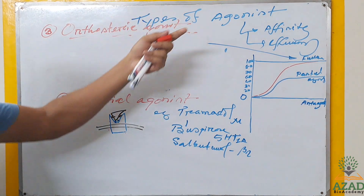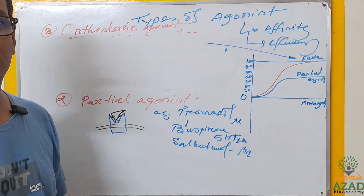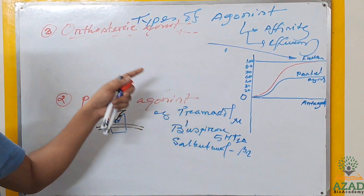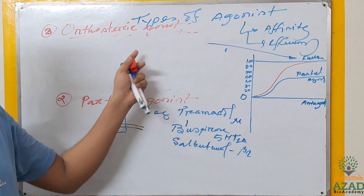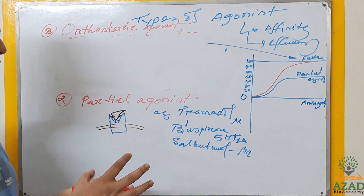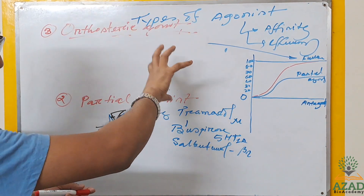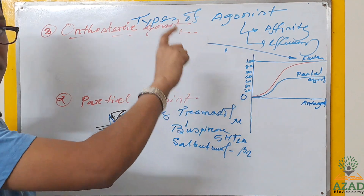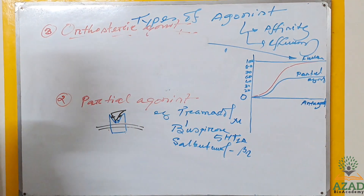Examples of orthosteric agonists include morphine, salbutamol, tramadol, dopamine, and serotonin — all substances that bind the main active binding site of their respective receptors.